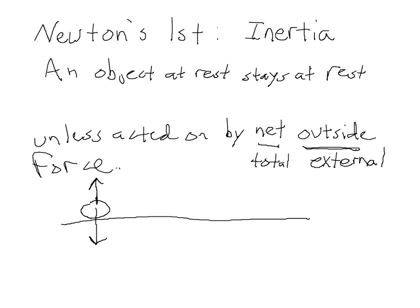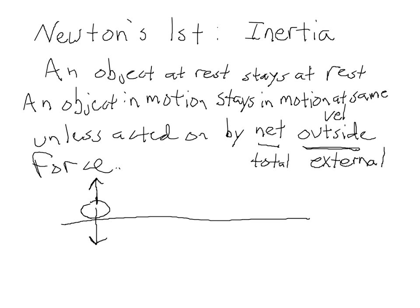How about the second part of Newton's First Law? The first part is an object at rest will stay at rest unless there's a net outside force on it. The second part says that an object in motion stays in motion at the same velocity. And remember, velocity includes both speed and direction. An object in motion will stay in motion with the same velocity unless it's acted on by a net outside force.